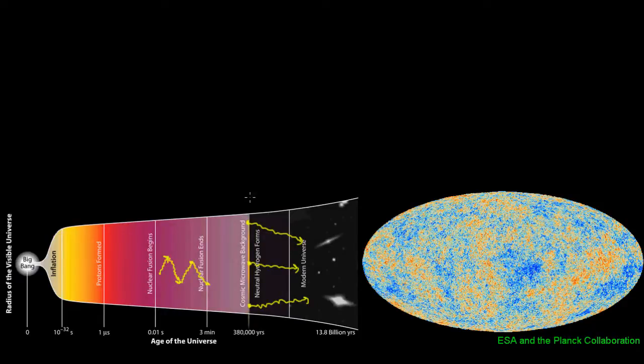So where does this CMB polarization come from? Well, let's look at what would happen to a free electron that's in this plasma just before the universe became transparent, and how that interacts with a ray of light.